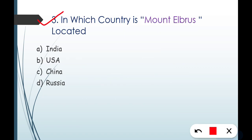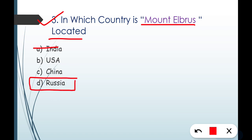Question number three: in which country is Mount Elbrus located? India can be easily eliminated. The other options are USA, China, and Russia. The correct answer is Option D — Russia. Mount Elbrus is located in Russia. You can link this with the Russia-Ukraine war news.